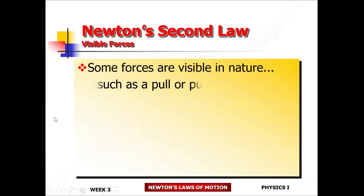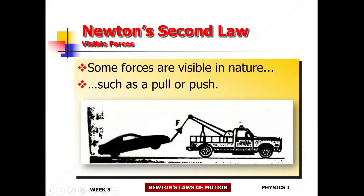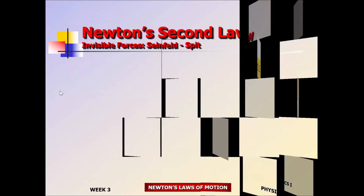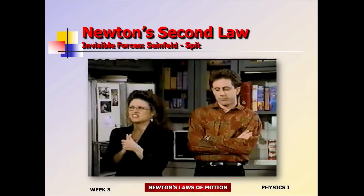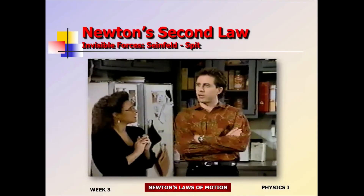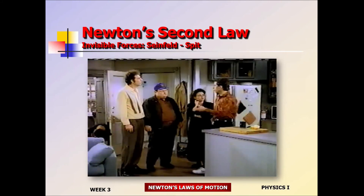One thing I want you to notice about force: with a tow truck or someone pushing, you can see the source of the force — there's a clear relationship between force and motion. But when it comes to gravity, that relationship is not obvious. Gravity is not something you can see. So how do we know gravity is a force? How do we know it acts in the downward direction?